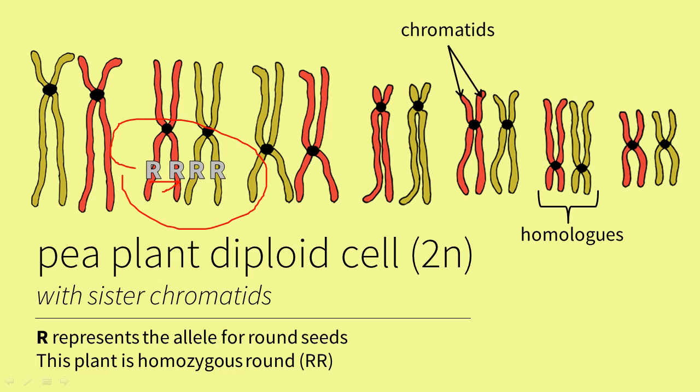Now chromatids, before crossing over, will be genetically identical because one was made from the other. So each chromatid will have an uppercase R. The other chromosome in the pair will also have an uppercase R, since the cell is homozygous for round seeds.